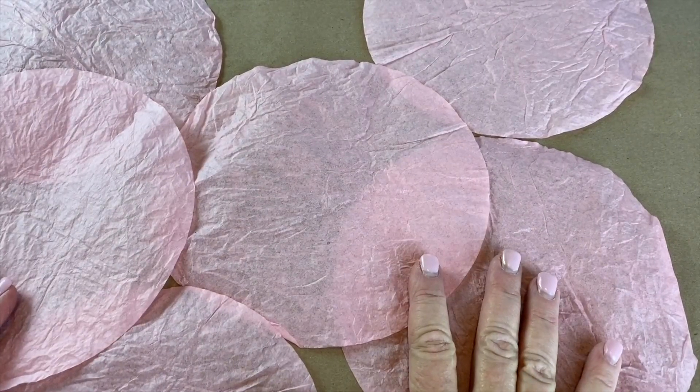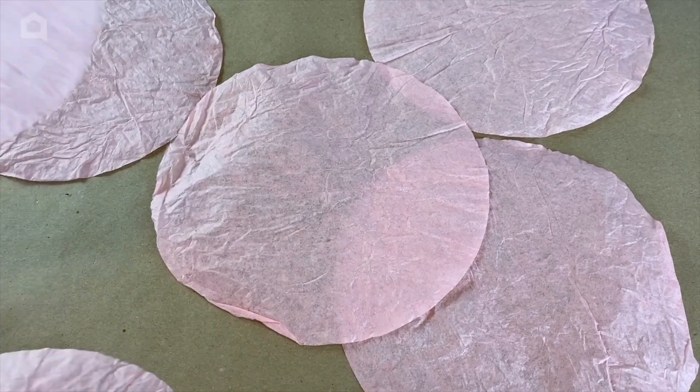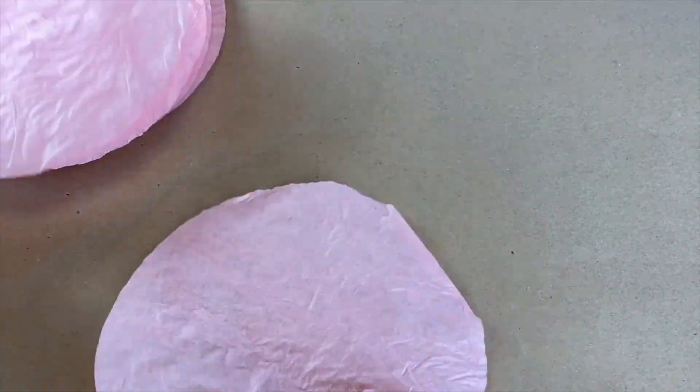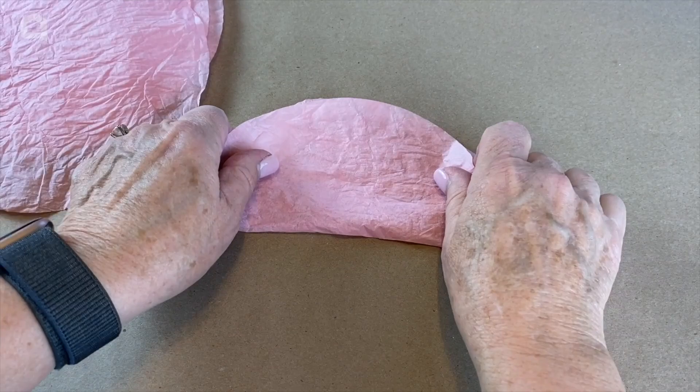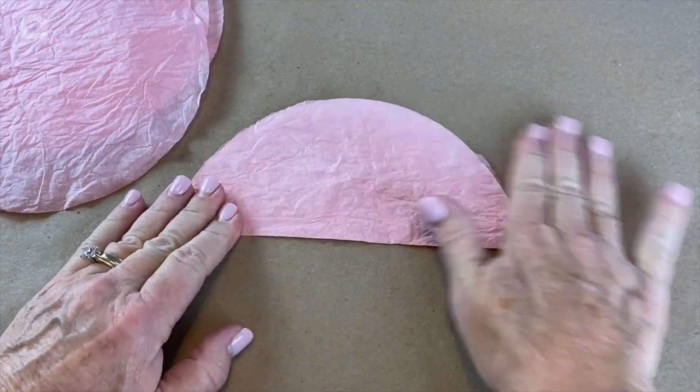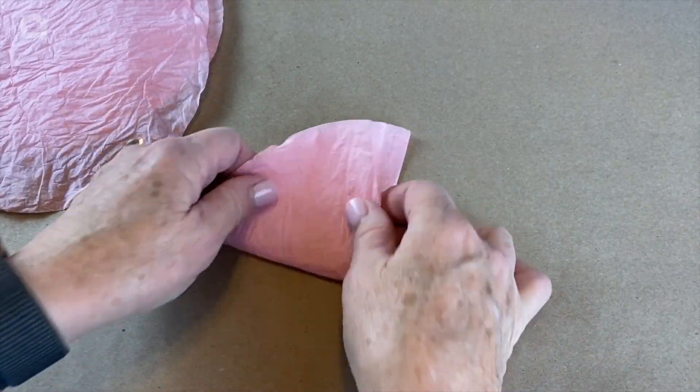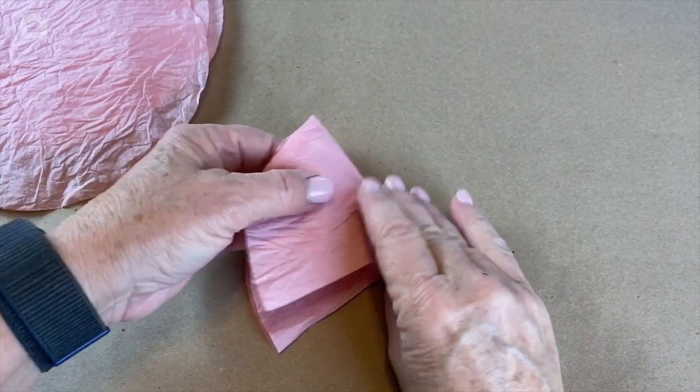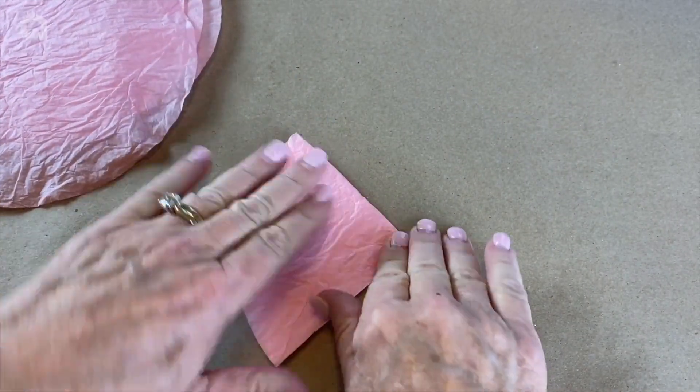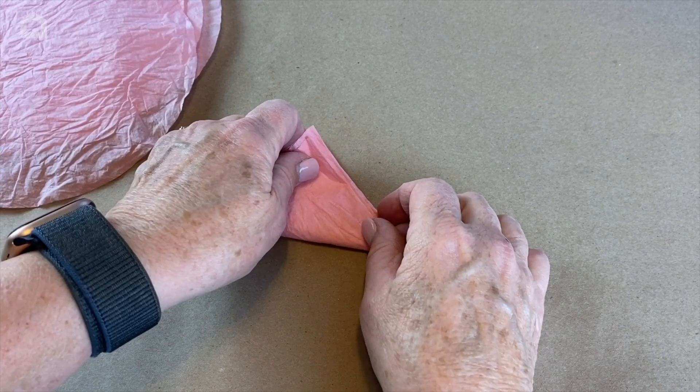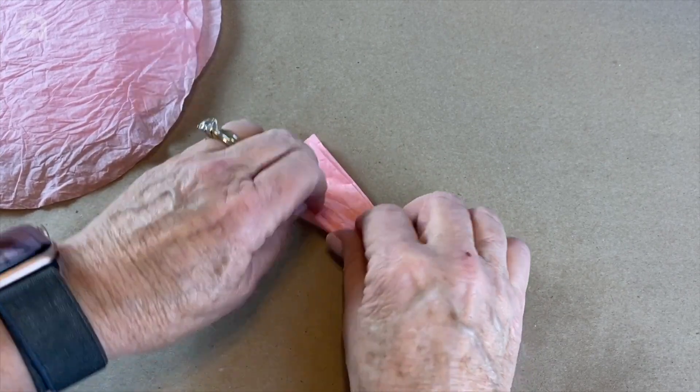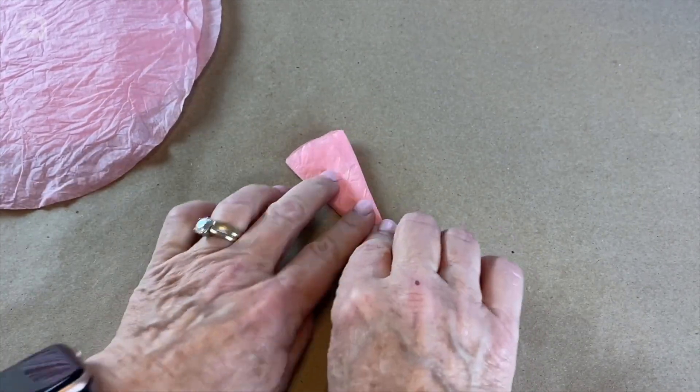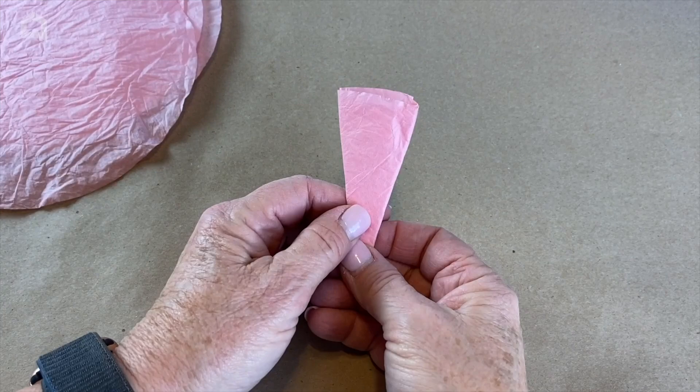After all of your coffee filters have dried, you're going to pick out six of your coffee filters. And what we're going to do is you're going to fold each one in half, so it kind of looks like a taco. Then you're going to fold it in half again. Fold it in half a third time and then fold it in half a fourth time. So it will look something like this.